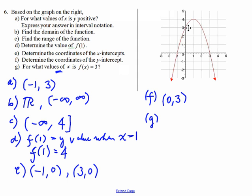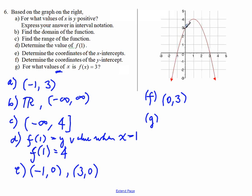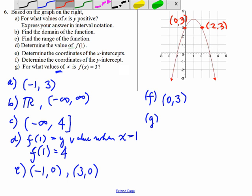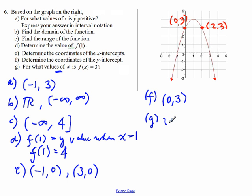The y value is 3, so we go up to y equal to 3 right here, and find the x values. We see one point here and then another point here. This point is (0, 3) and this point is (2, 3). So the two x values are x equal to 0 for this one, and x equals 2 for this point.